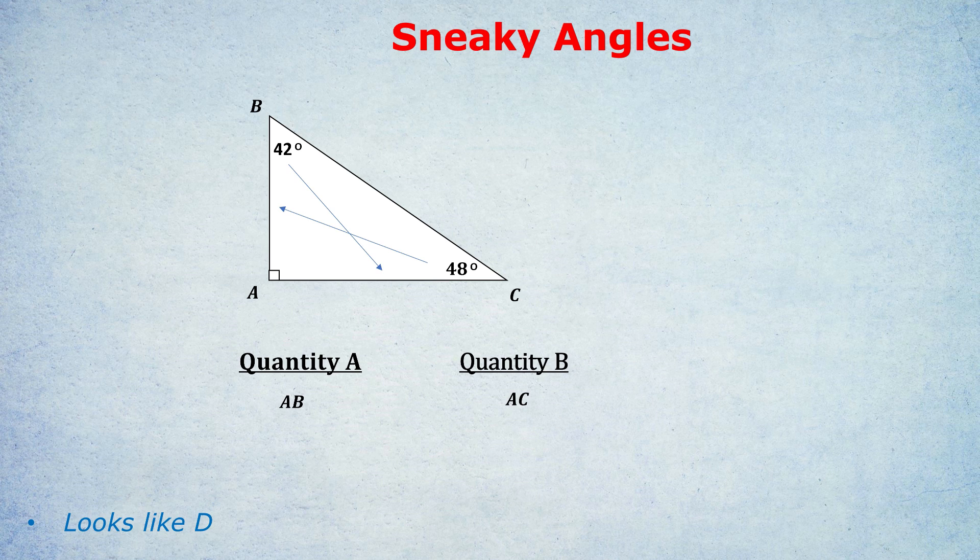It's that simple. It's an amazing trick, little known, and I'm going to show you two other examples of how it can be tested. To finish this one off, we therefore know that side AB opposite the 48 degrees is bigger. So quantity A is bigger.